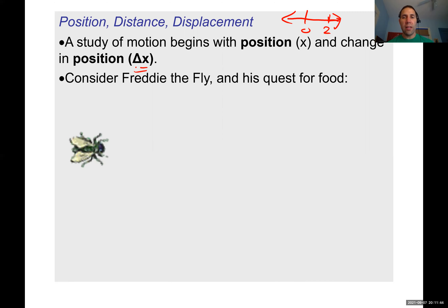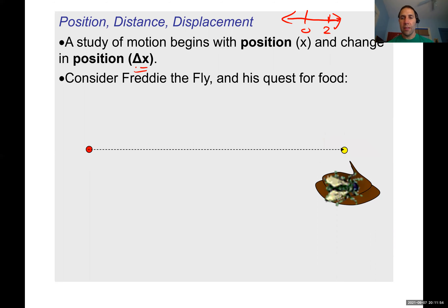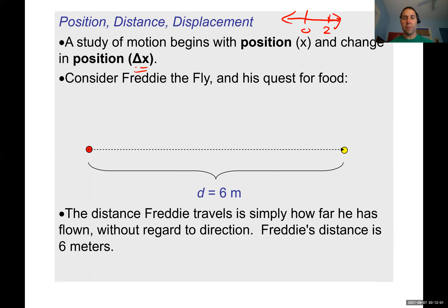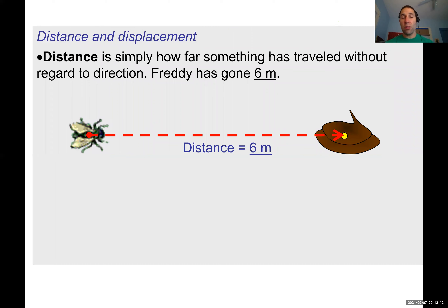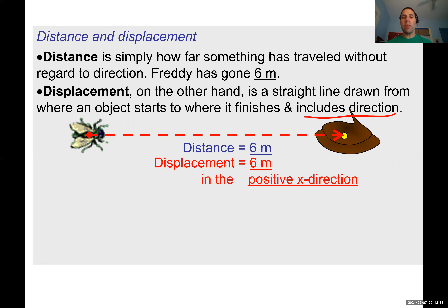Consider Freddy the fly in their quest for food — they fly toward a melted chocolate chip. The distance they travel is six meters. Distance is simply how far Freddy travels regardless of direction, like a pedometer reading. Displacement, however, is a straight line from where an object starts to where it finishes, and it includes direction.